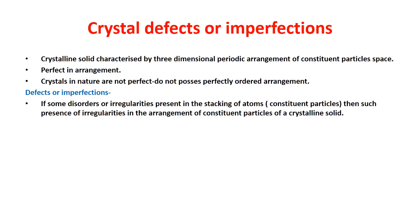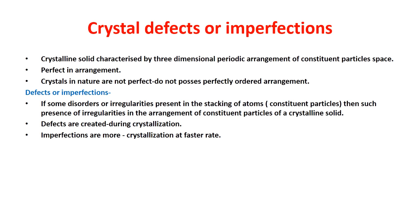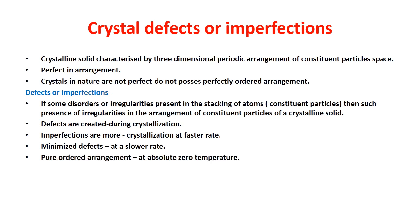In crystalline solids, defects are created during the process of crystallization. The imperfections are more if crystallization occurs at a faster rate, meaning it is possible to minimize defects by carrying out crystallization at a slower rate. The pure ordered arrangement is observed only at absolute zero temperature. Above absolute zero temperature, crystalline materials are not 100% pure — they contain defects.